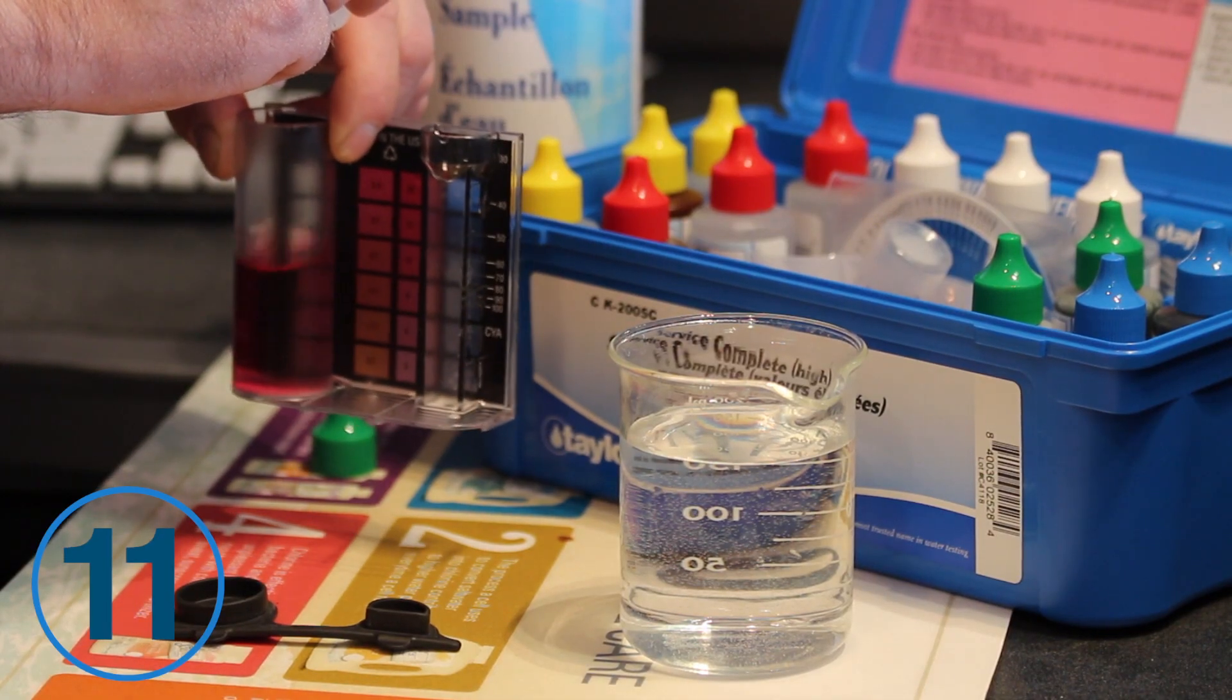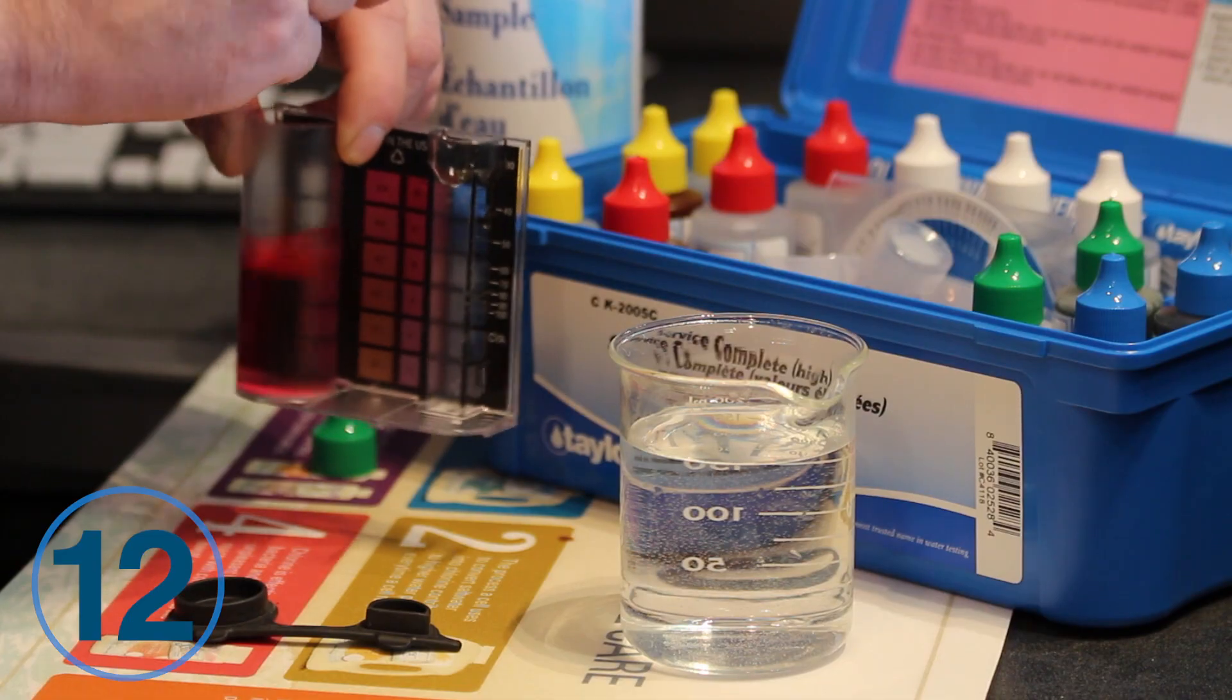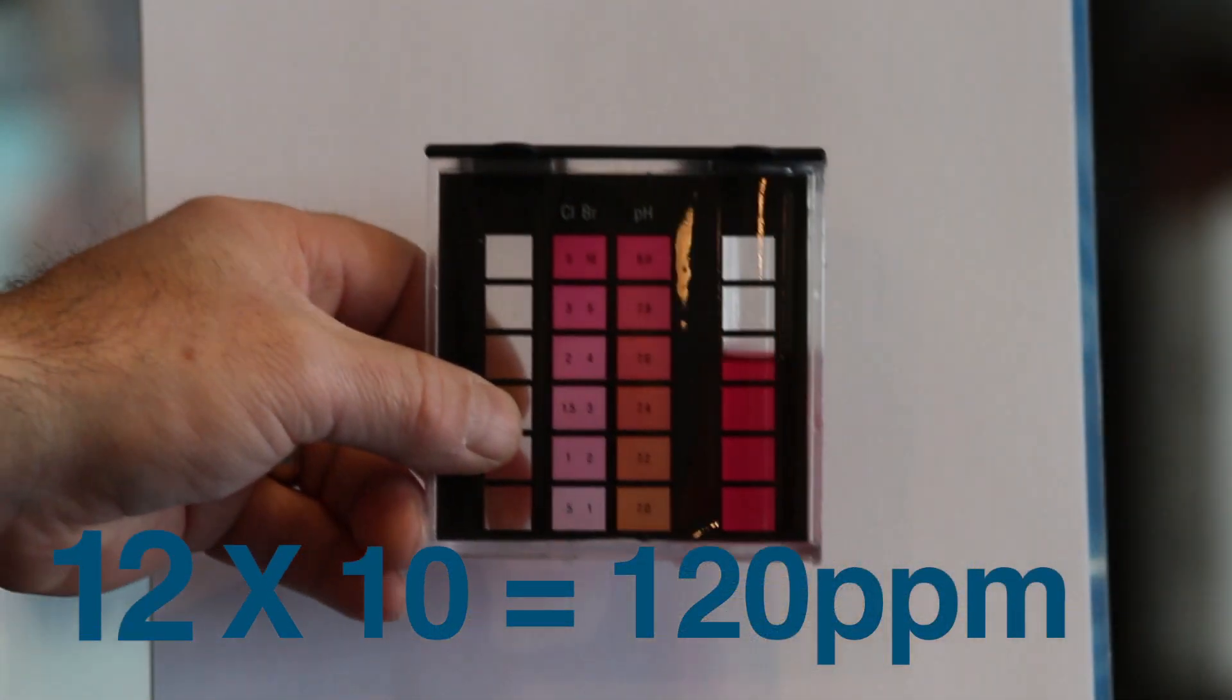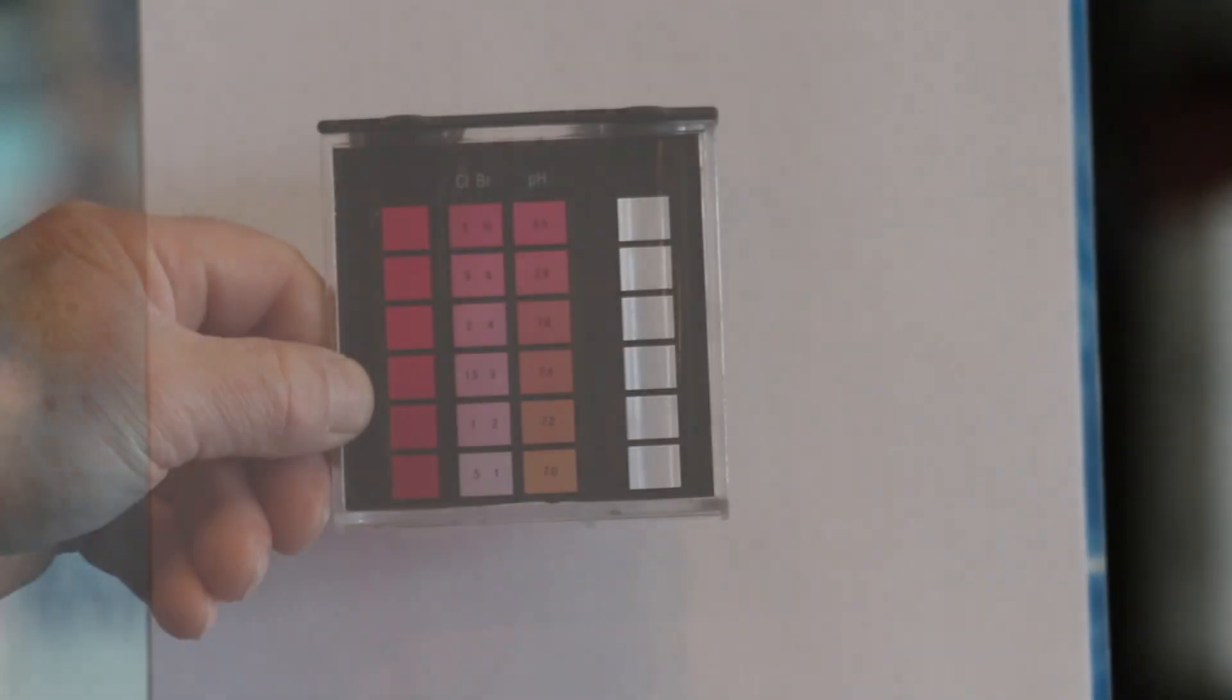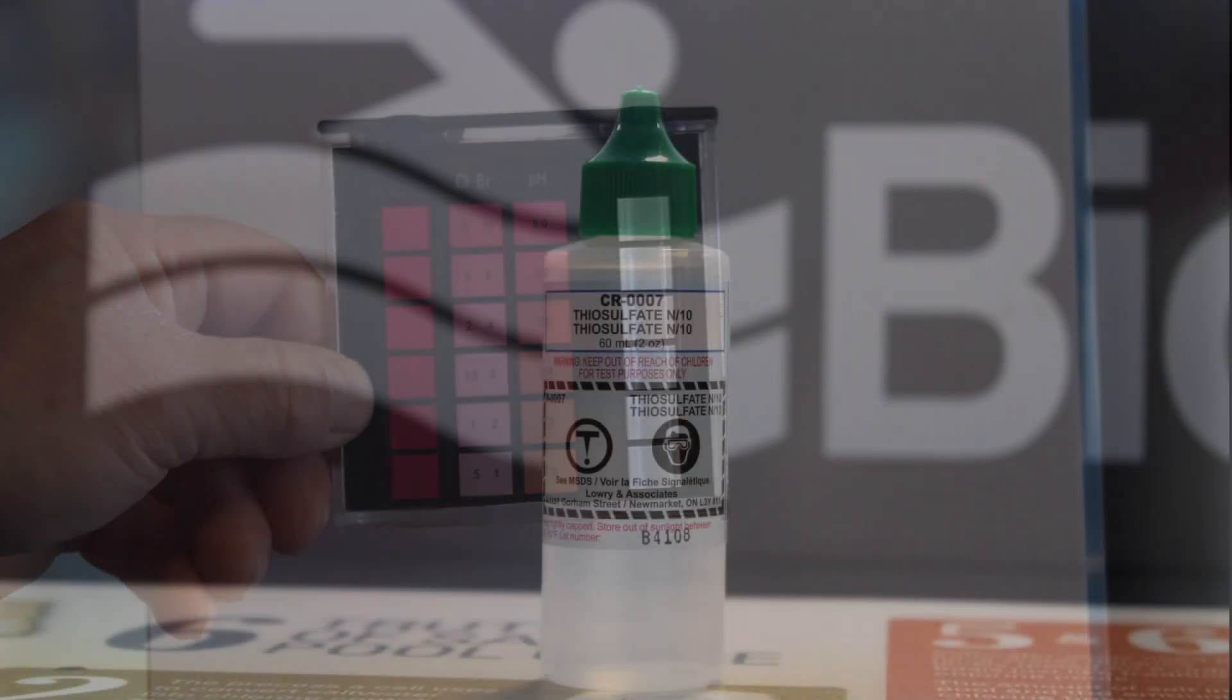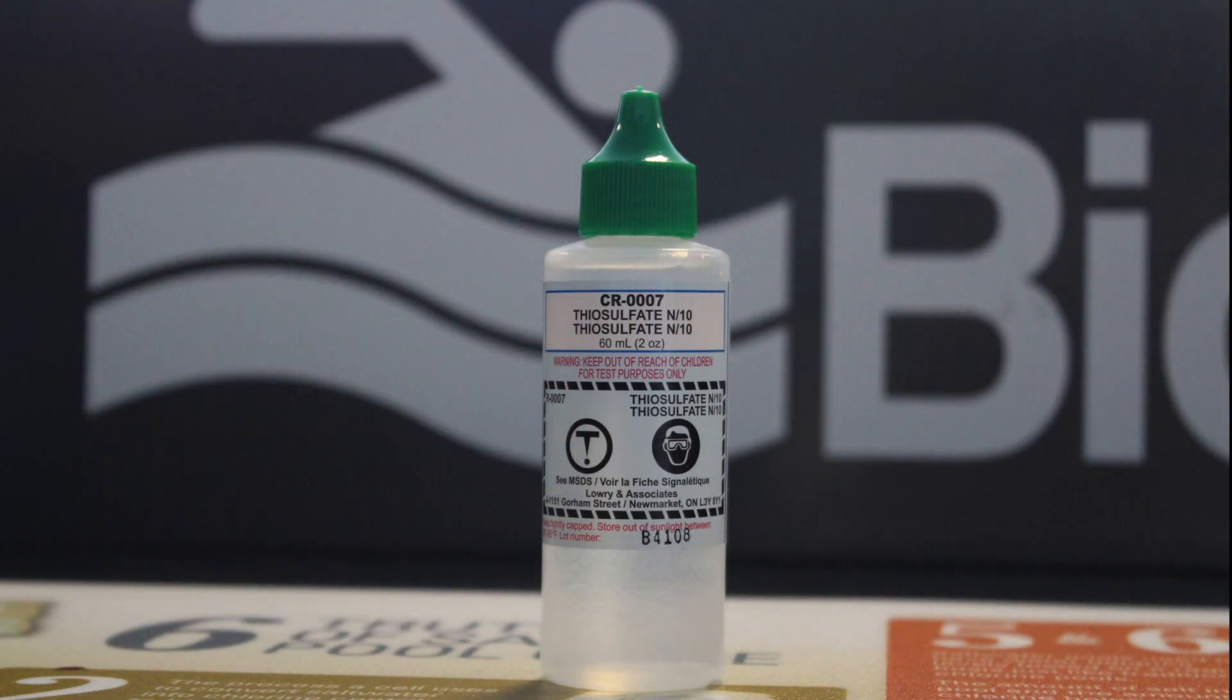If there is no change, do not count this drop. Now multiply by 10 to record as total alkalinity. If you have high chlorine levels present in your water sample, add an extra drop of reagent number 7 to remove the chlorine interference.